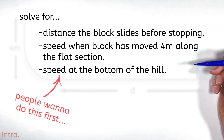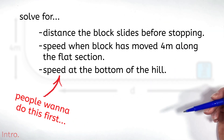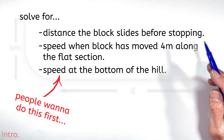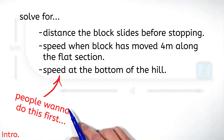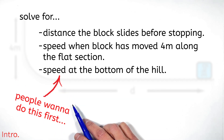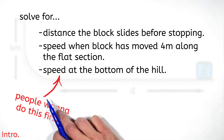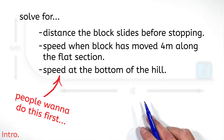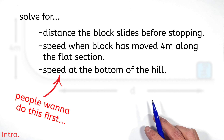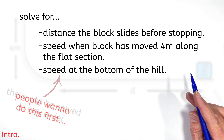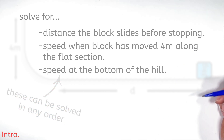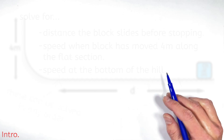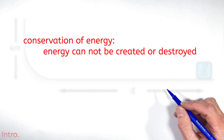That may seem like a strange order to solve these problems in, but a lot of people think you have to solve for the velocity of the block at the bottom of the hill first and then carry that number into the rest of the problem. That's not true, and I'll show you why as we work through this. This entire problem is centered around the conservation of energy.